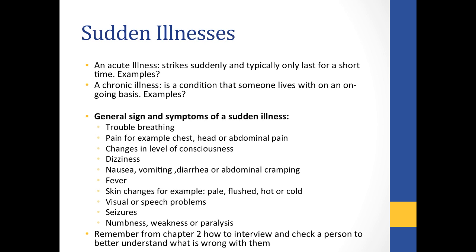Sudden illnesses in general are acute illnesses that strike suddenly and typically only last for a short amount of time. Chronic illnesses are conditions that someone lives with that come and go over time. Examples of acute illnesses include influenza, a stomach bug, or bronchitis. Chronic illnesses include things like diabetes and epilepsy — both are examples of conditions considered chronic.